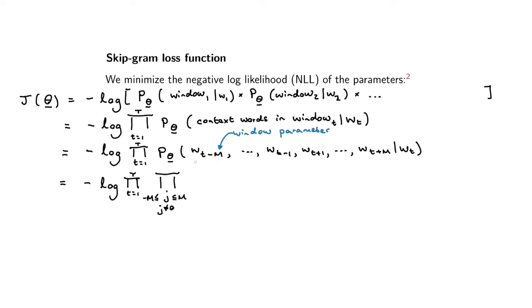I'm going to use j for the context word index, and j goes from minus m to capital m, but j won't be equal to zero because we're not going to look at the word itself. Then we've got p of theta wt plus j given wt. This is based on the second assumption. Here we've used assumption one, the i.i.d. assumption, and here we've used assumption two, which says each of the words are conditionally independent given the center word.